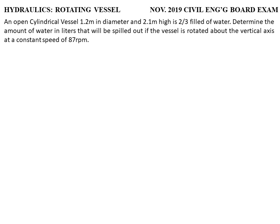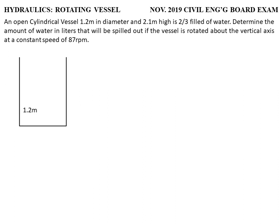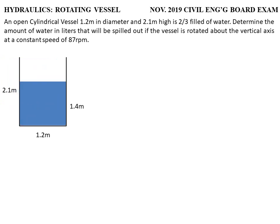An open cylindrical vessel 1.2 meters in diameter and 2.1 meters high is two-thirds filled with water. Determine the amount of water in liters that will be spilled out if the vessel is rotated about the vertical axis at a constant speed of 87 revolutions per minute.